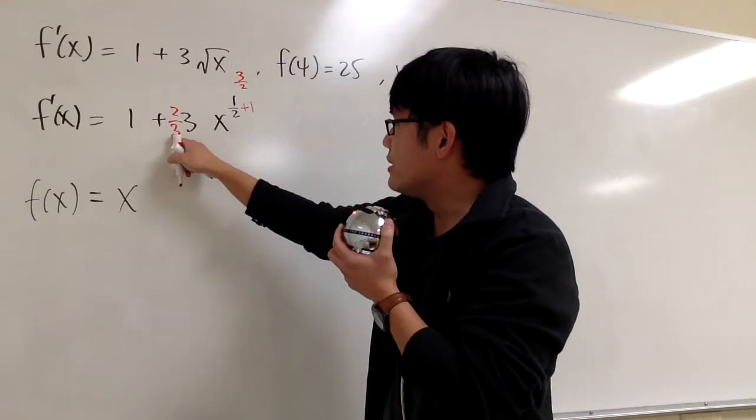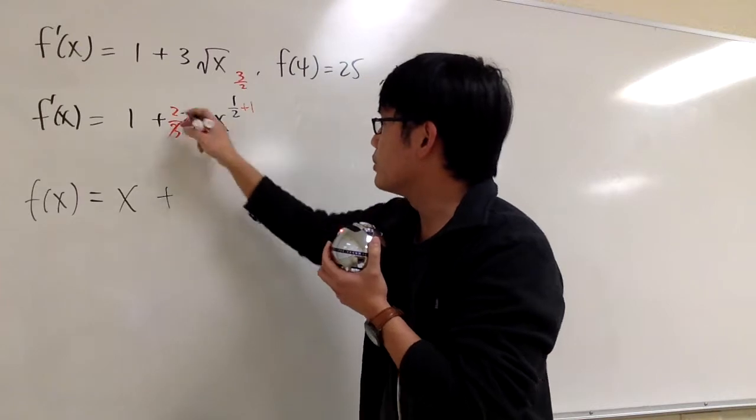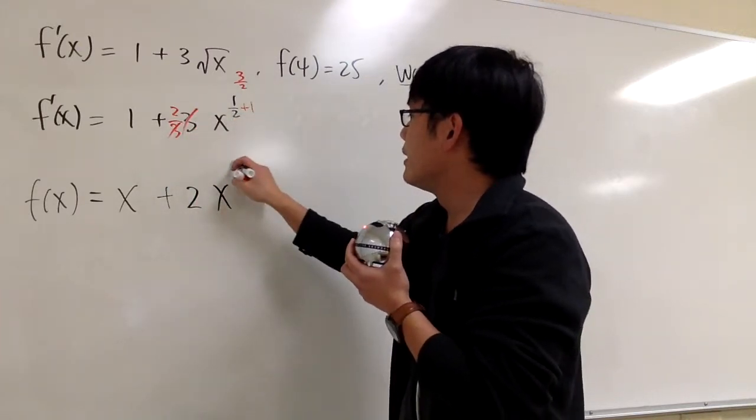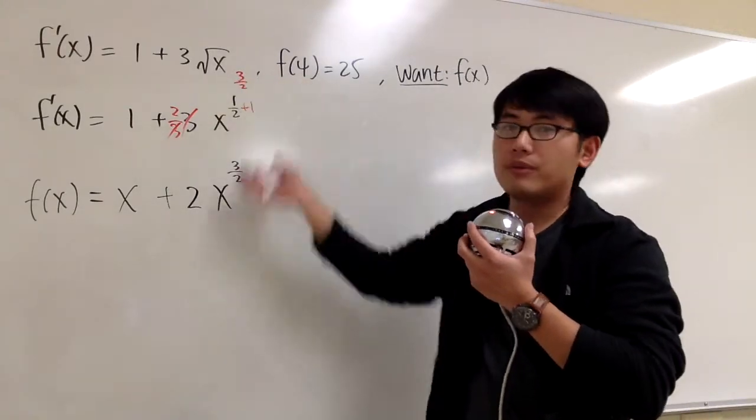So I'm going to look at this as 2/3. Then put that in the front. And as you can see, the 3 and the 3 will cancel each other out. This is going to be plus 2, and then here we have x to the 3/2 power. That's the anti-derivative for the derivative right here.